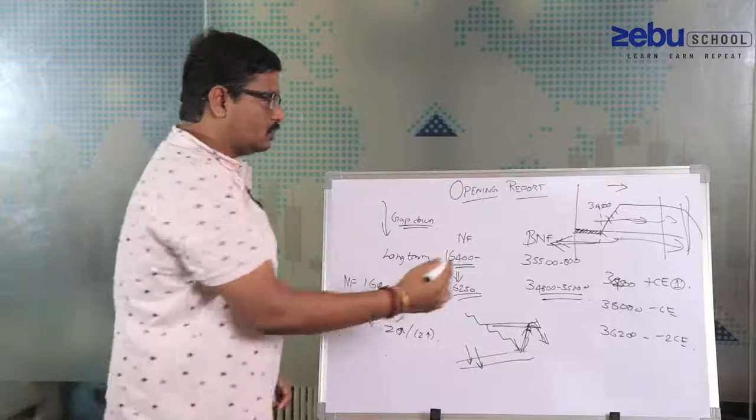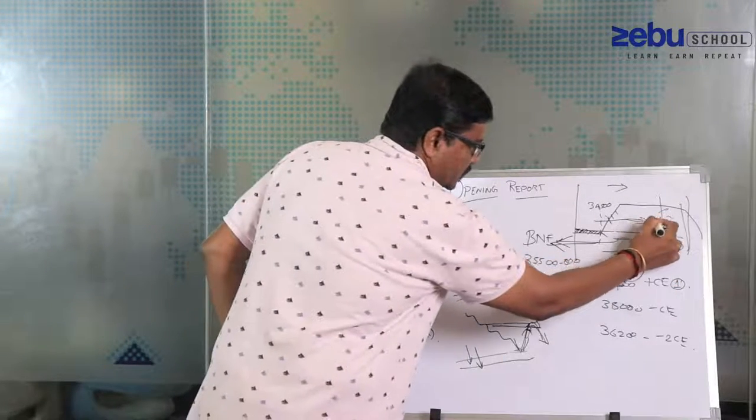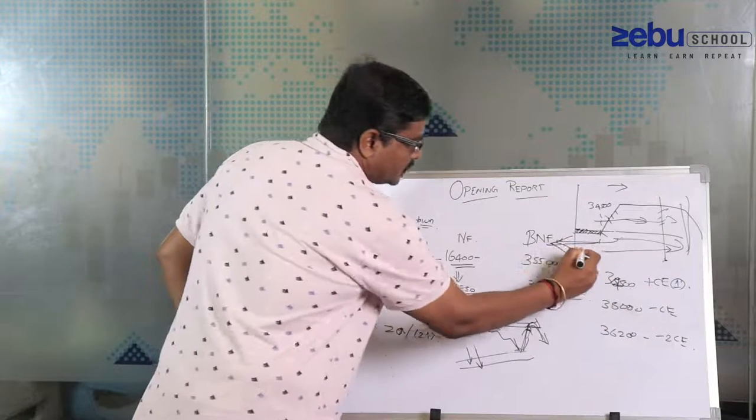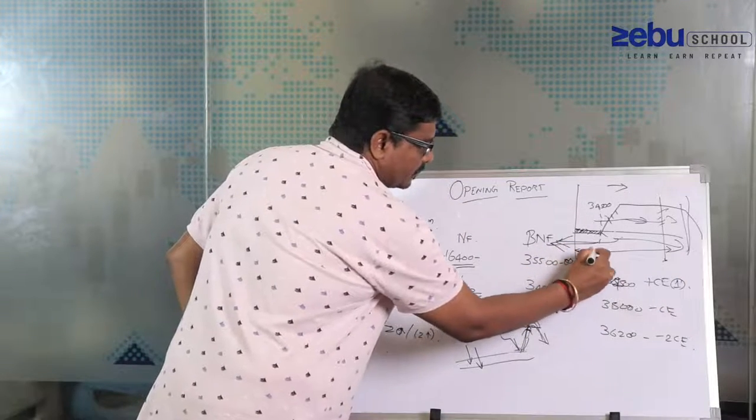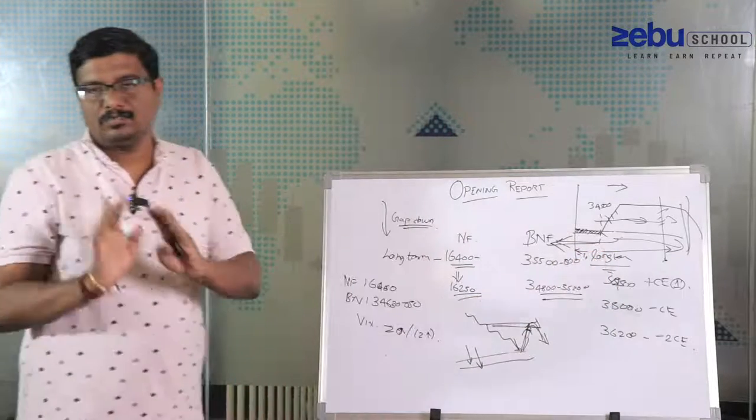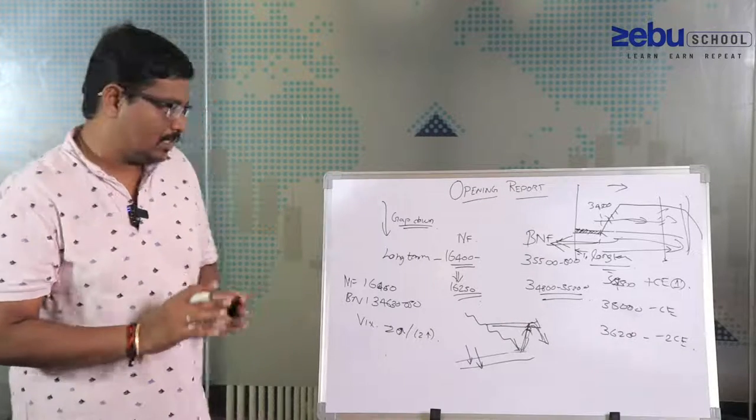Moreover, if the market moves somewhere here to my swing resistance, I might be booking these positions and then maybe initiating a fresh bearish position. Or else I will wait for this level to initiate a long term position in terms of bullishness. This is what my view is.